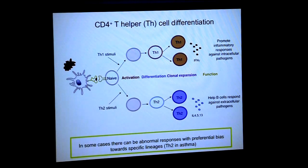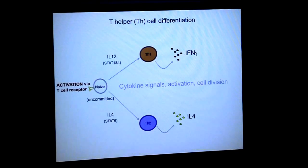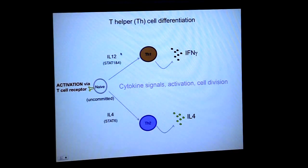T helper cells are very helpful for responding against pathogens. But there are also cases where you can have abnormal responses with a bias towards a certain lineage — for example, TH2 cells in asthma, which are known to be important for actually causing asthma. I wanted to go into a bit more detail about how these cells develop.